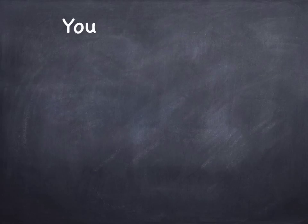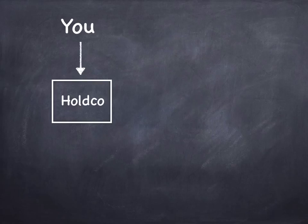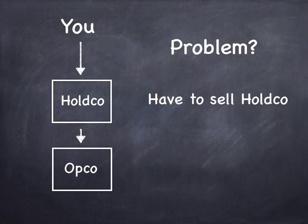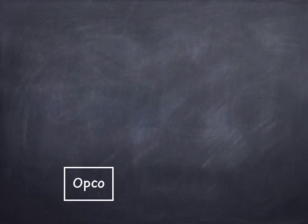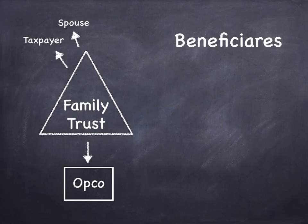Let's remind ourselves of the problem with the basic structures we've covered in previous videos. If you own an opco directly, the problem is that there's a buildup of bad assets. If you own a holdco that owns an opco, the problems are: number one, you have to sell the holdco, and number two, you have the buildup of bad assets, potentially in both companies. In this structure, the operating company is owned by the family trust, with beneficiaries being the taxpayer, the spouse, the children, and the holdco.